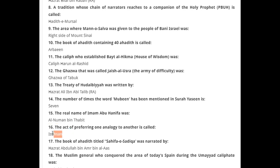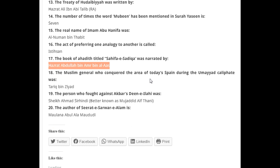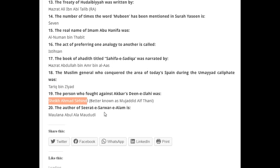The book of Ahadith titled 'Sahifa-i-Sadiqah' was narrated by Hazrat Abdullah bin Amr bin al-As. The person who fought against Akbar's Deen-i-Ilahi was Shaykh Ahmad Sirhindi. The author of 'Sirat-i-Sarwar-i-Alam' is Maulana Abdul Ala Maududi.